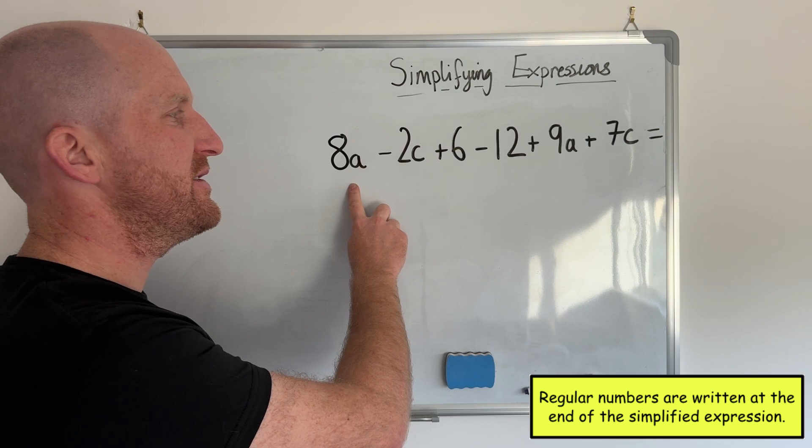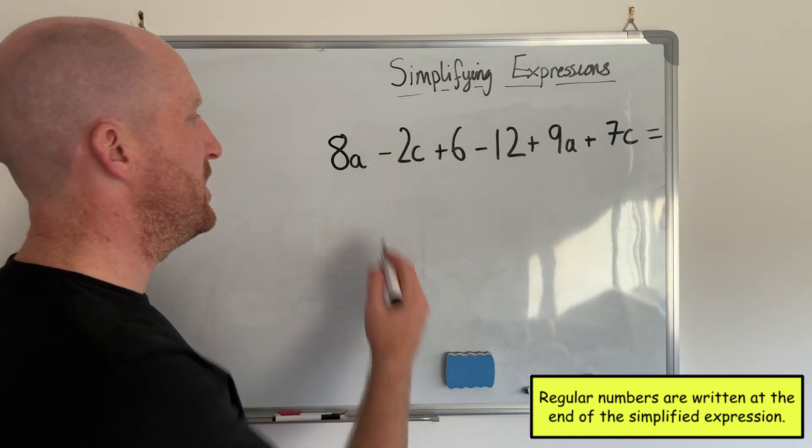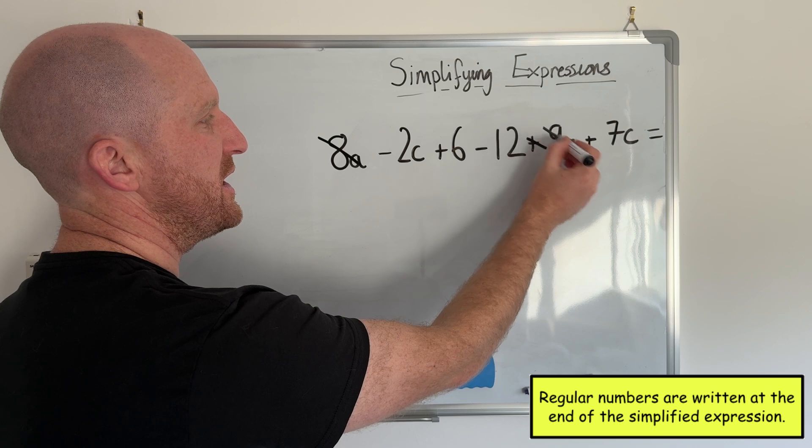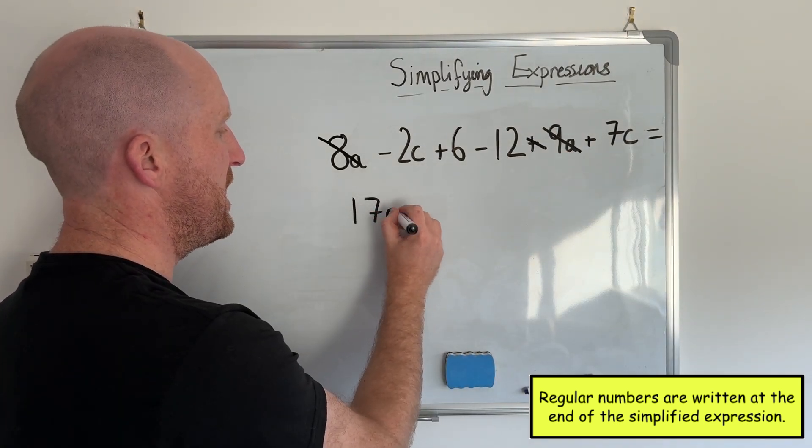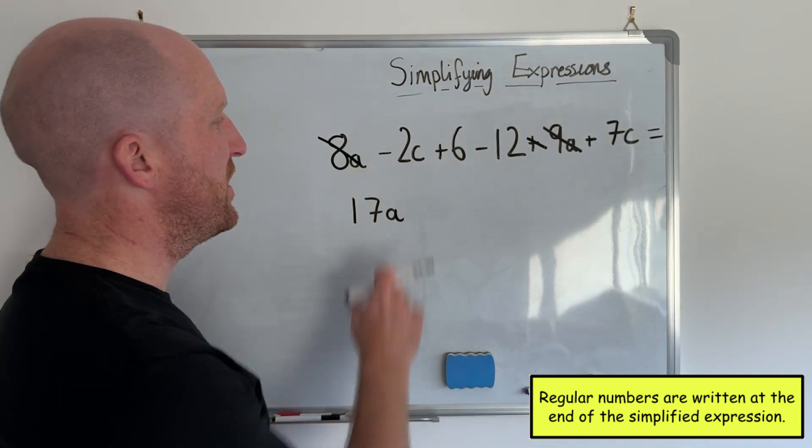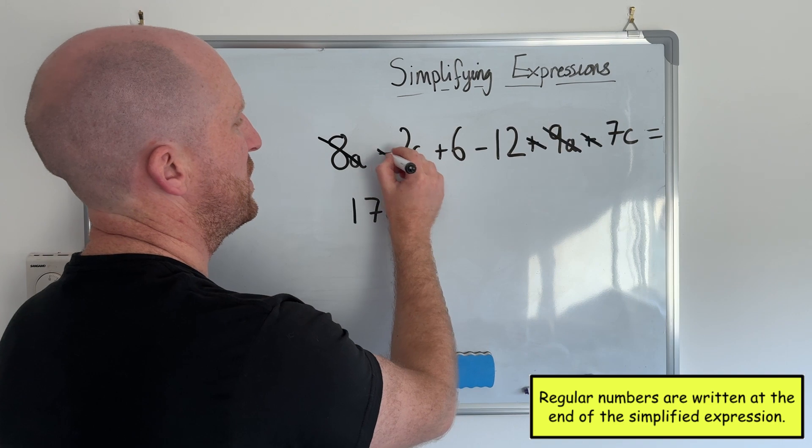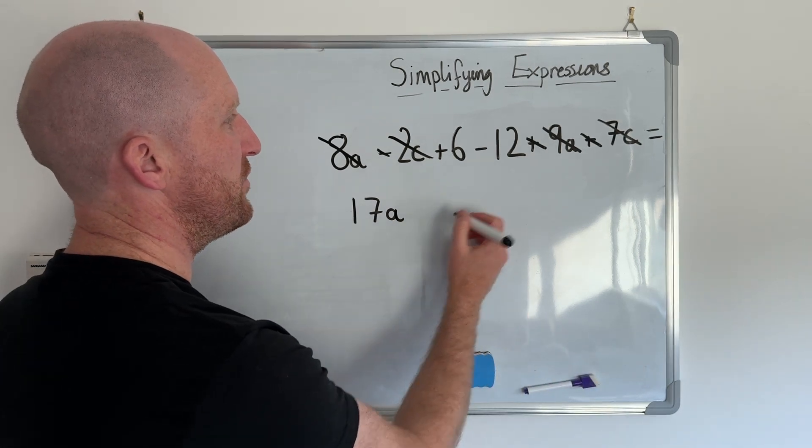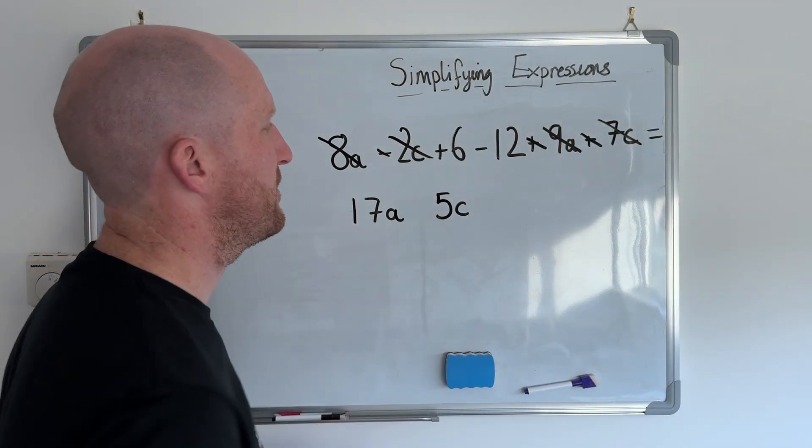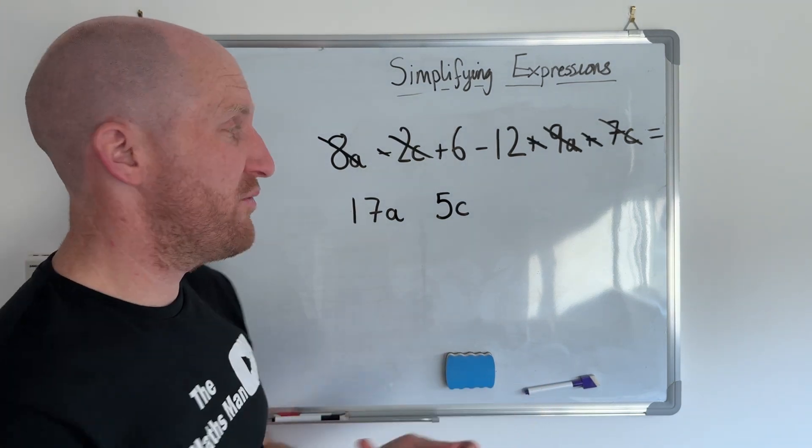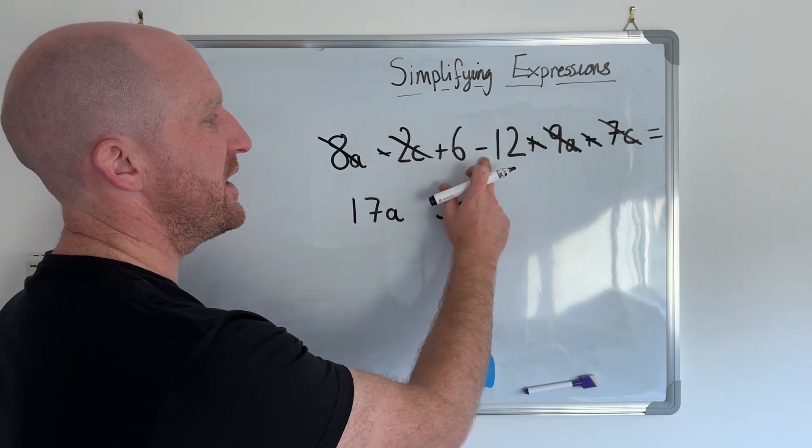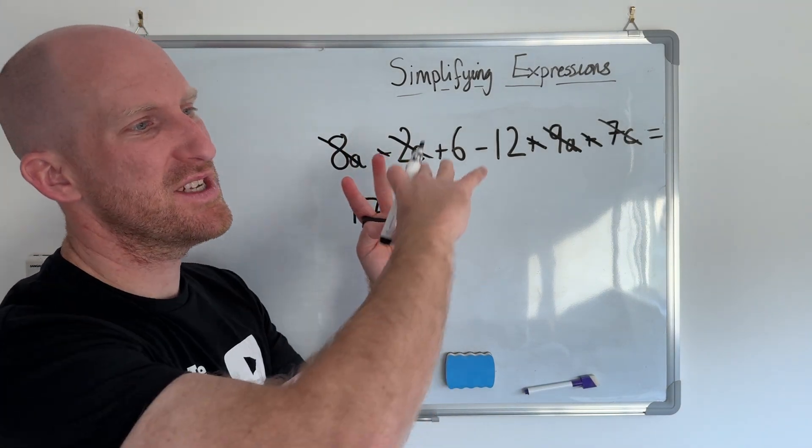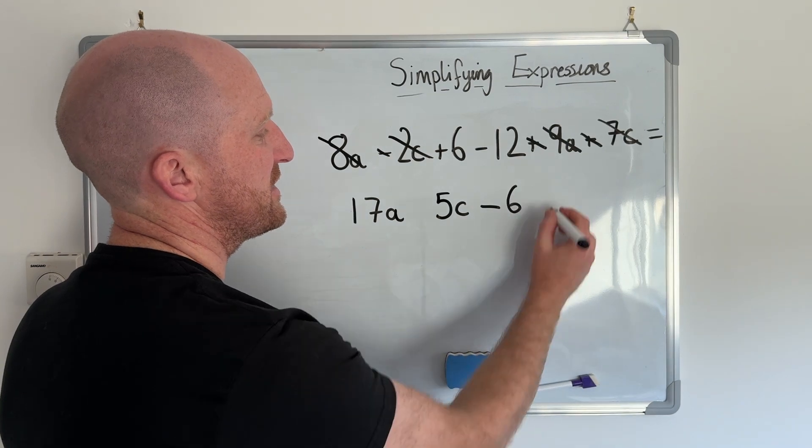So I'm going to start with the a's. And then I'm going to do the c's. And then I'm going to do the regular numbers. So if I start with the a's I've got 8a plus 9a. So 8a plus 9a gives me 17a. Then I'm going to go to the c's. So I've got negative 2c plus 7c. So if I've got negative 2c add 7 gives me 5c. Then I've got now I'm going to deal with the regular numbers. So I've got plus 6 take away 12. So if I've got plus 6 take away 12, that's going to give me negative 6.